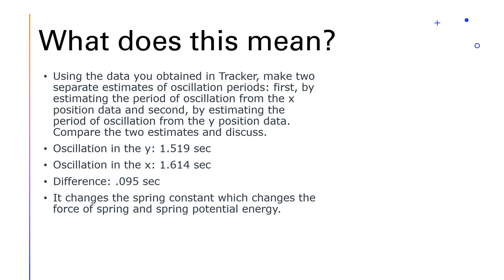Using the data obtained in the tracker, I made two separate estimates of the oscillation period. The oscillation period in the y direction would be 1.519 seconds, and the oscillation period in the x direction would be 1.614 seconds. The difference would be 0.095 seconds. This is significant as it changes the spring constant, which changes the spring force and the spring potential energy.